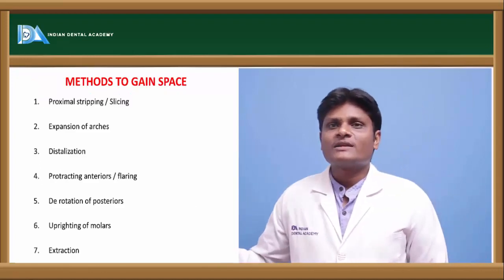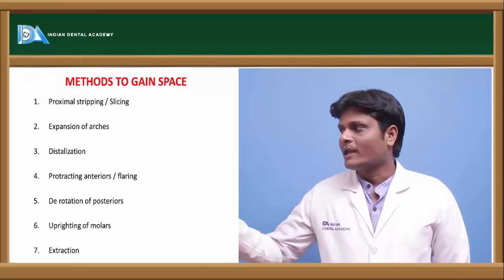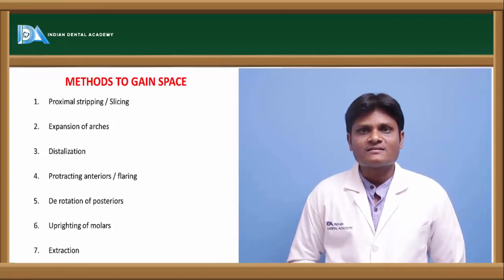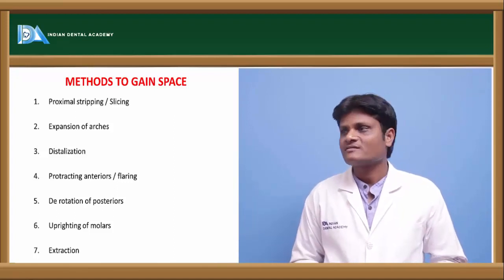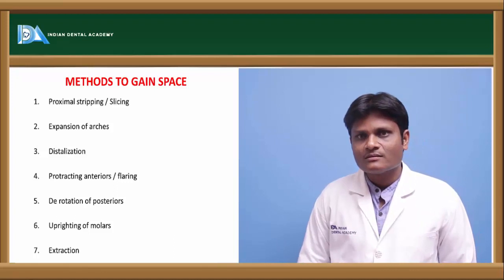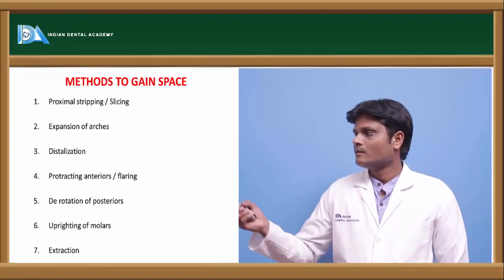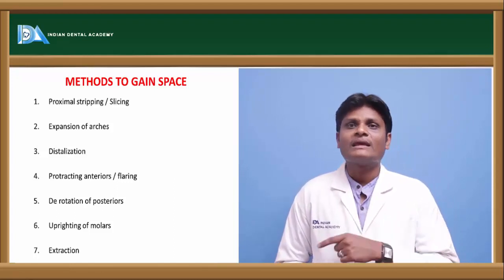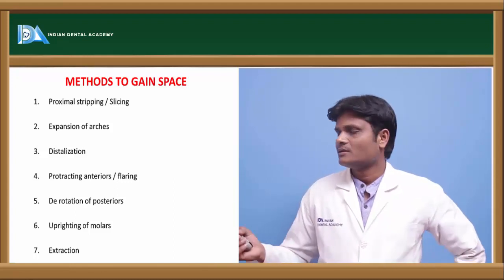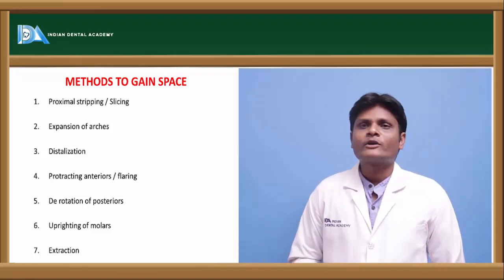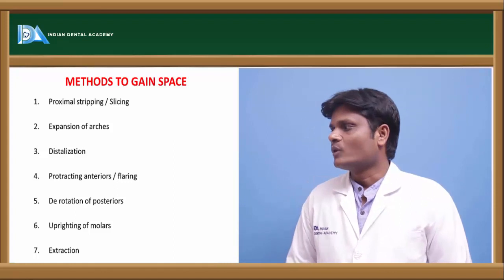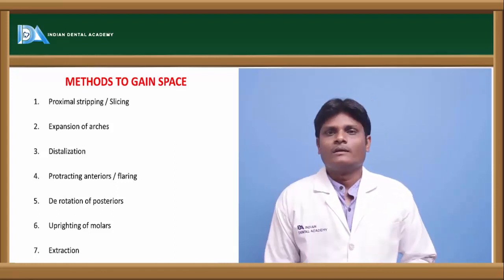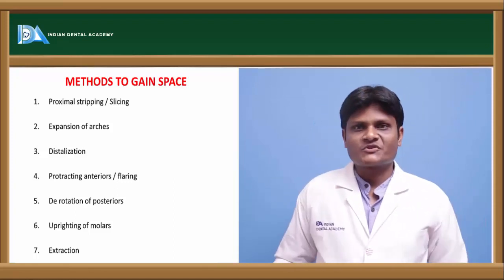These are the different methods of obtaining space: proximal stripping or slicing, expansion of the dental arches, distalization of the molars (particularly the permanent first molar), protracting or flaring the anteriors to increase arch perimeter, derotation of posterior teeth, uprighting of molars, and extraction of teeth in the dental arches.